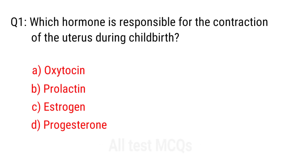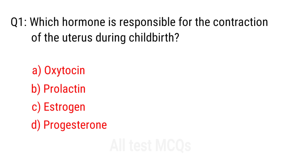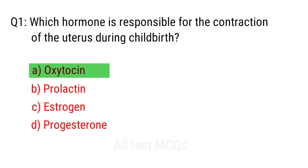Q1. Which hormone is responsible for the contraction of the uterus during childbirth? The right answer is option A: Oxytocin.